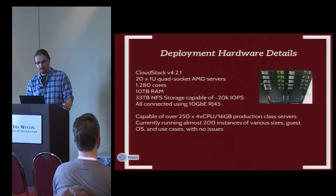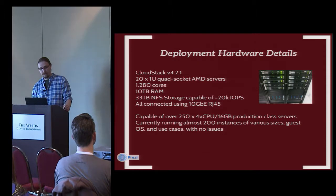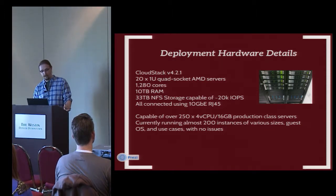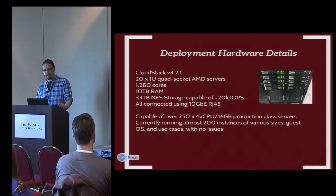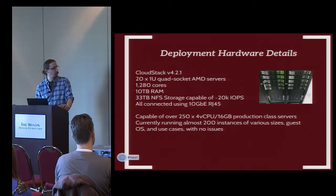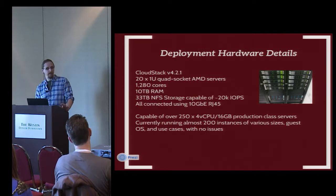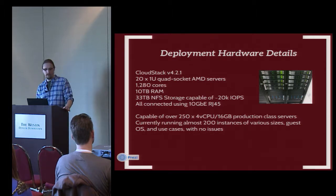Here are the hardware details. We had 20 1U boxes — quad socket AMD Opteron, 16 cores per socket, totaling 1,280 cores, 10 terabytes of RAM, and 33 terabytes of NFS storage, of which we provisioned 27. Since it was an extent-based solution with read and write cache off SSD and RAM, it could achieve 20,000 IOPS easily — we ran iometer tests all day to confirm. It was all connected via 10-gig Ethernet RJ45 connections, very easy to manage, no network team involvement needed.